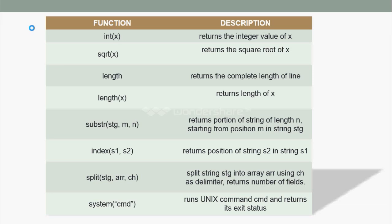AWK also has some common string handling functions. These include: int(x) returns the integer value of x; sqrt(x) returns the square root of x; length returns the complete length of the line; length(x) returns the length of x; substr(stg, m, n) returns the portion of string of length n starting from position m; index(s1, s2) returns the position of string s2 in string s1; split(stg, array, ch) splits the string into an array using ch as delimiter and returns the number of fields; finally, system(cmd) runs the Unix command cmd and returns its exit status.